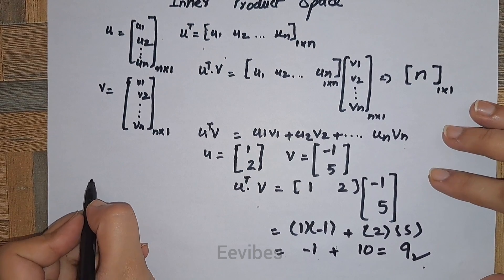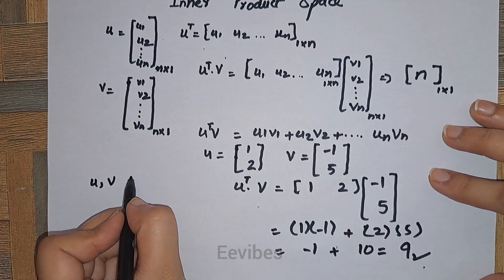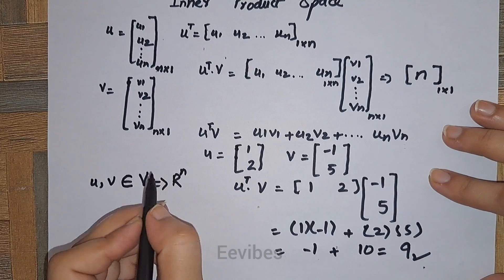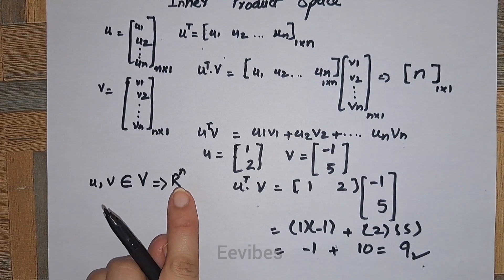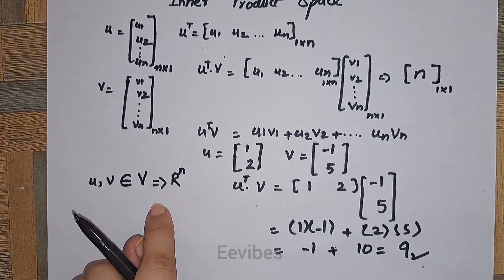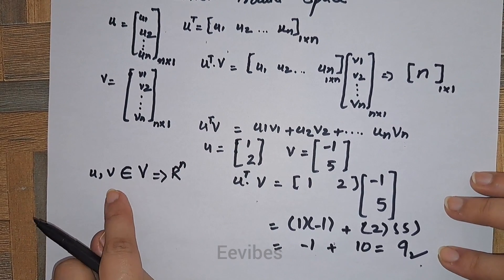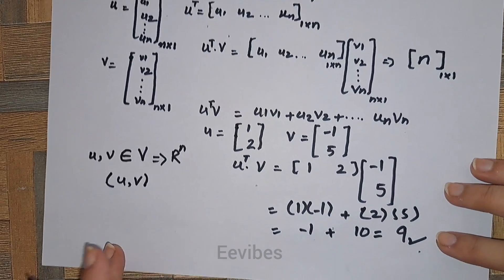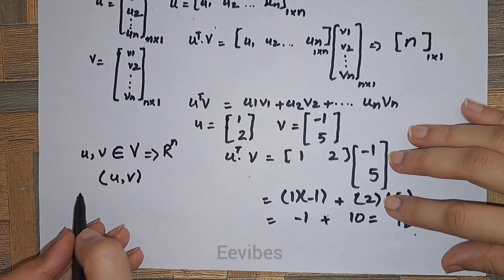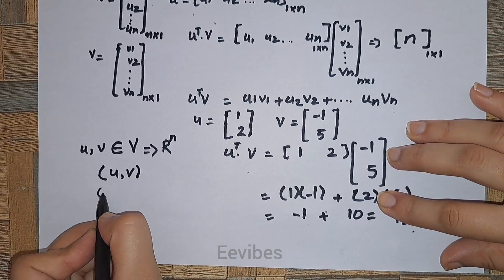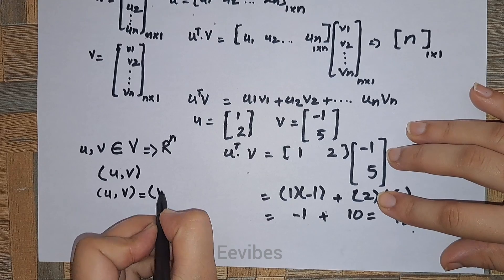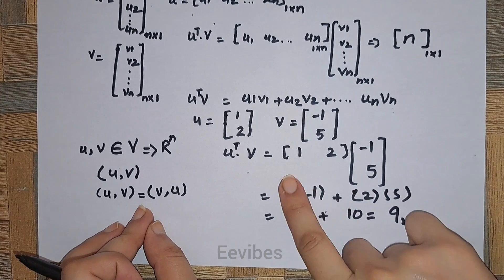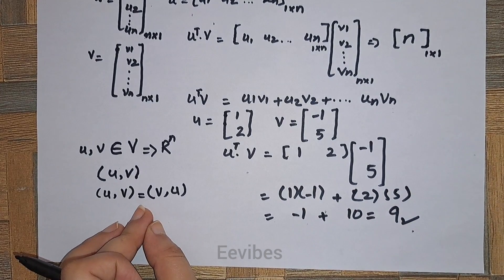Now moving to the inner product space concept: assume you have two vectors u and v that both belong to a vector space V, which can have any dimension over the real numbers. An inner product space is a function that, to each pair of vectors u and v in V, associates a real number ⟨u, v⟩ satisfying four axioms. The first axiom is the commutative property: ⟨u, v⟩ = ⟨v, u⟩, because multiplying constants gives the same result regardless of order.